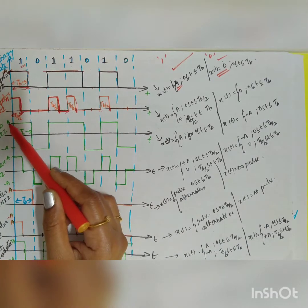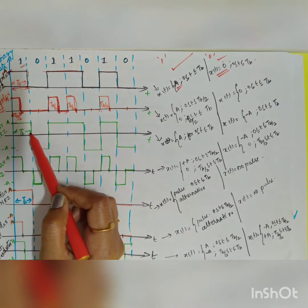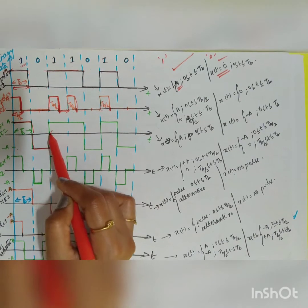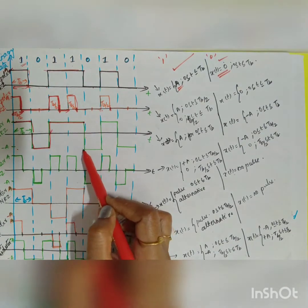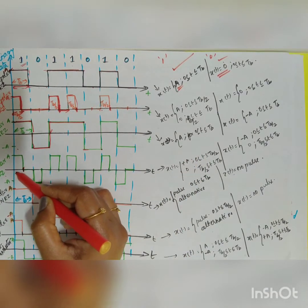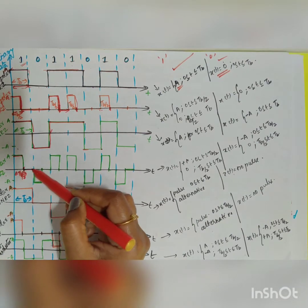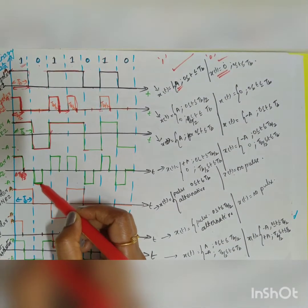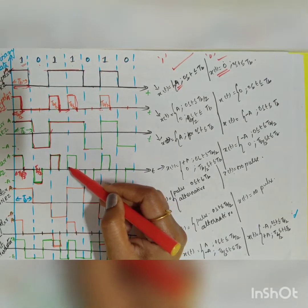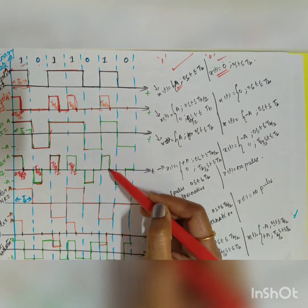For polar non-return to zero: 1 means A and 0 means minus A, for the entire duration. So in the sequence, 1 gives A, 0 gives minus A, the two consecutive 1s give plus A, then minus A, then plus A, then 0. For polar return to zero: each symbol occupies half duration Tb/2. For 1, positive pulse A for Tb/2; for 0, minus A for Tb/2; remaining half is 0.